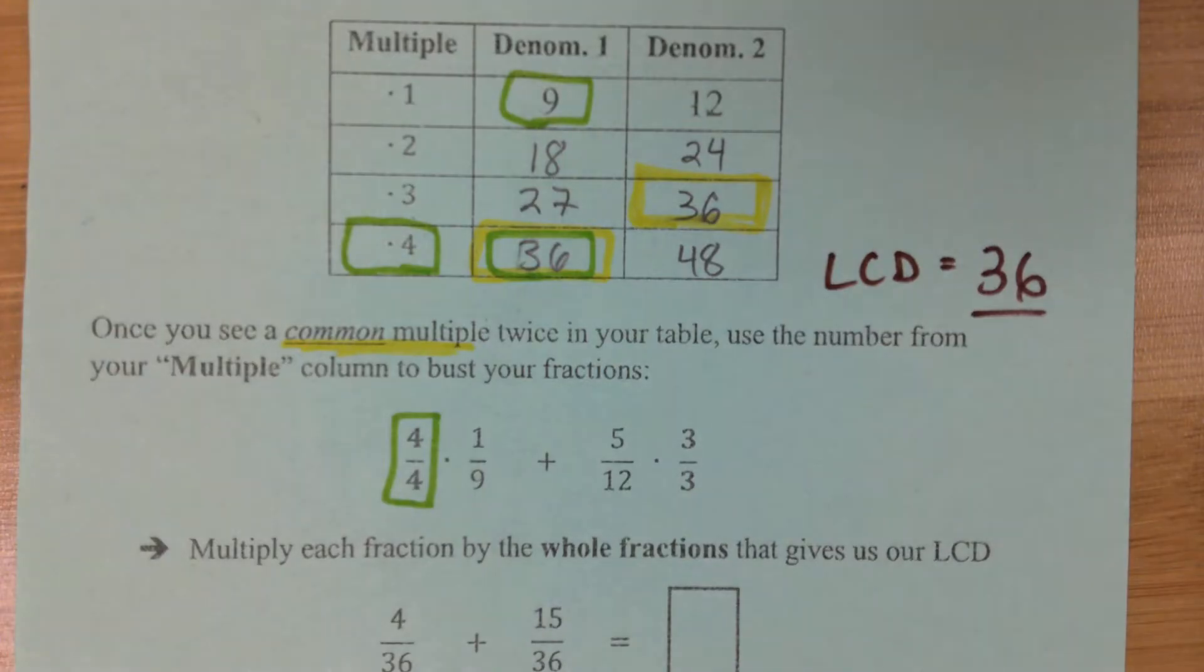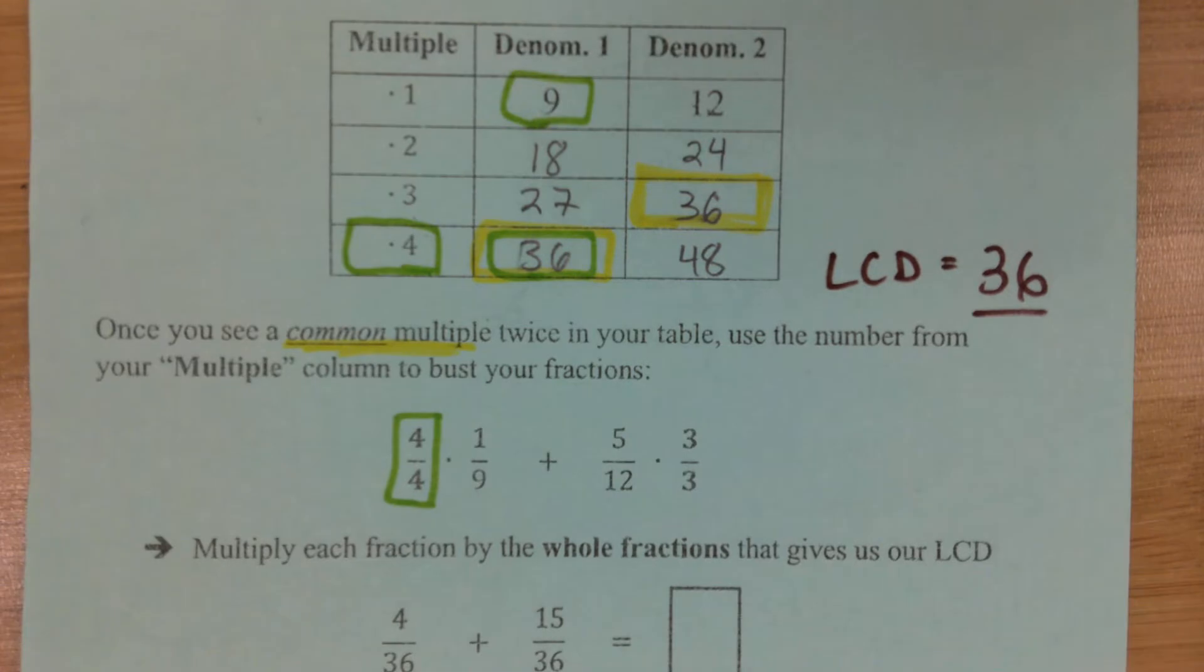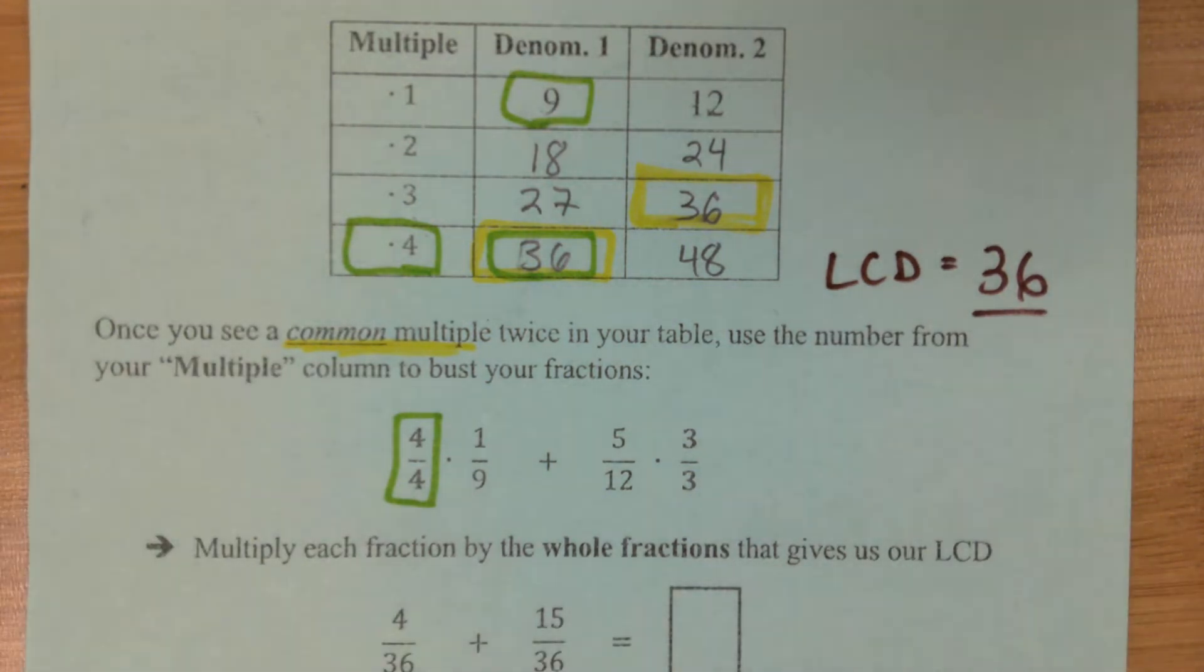No, it doesn't. What's 3 times 1? 3. What's 10 times 1? 10, right? Whenever we multiply a number by 1, we're really just doing nothing with it. Now when we multiply it by a fraction, a whole fraction as we call it, because the top number is the same as the bottom number, we're not changing what the number is. We're just kind of inflating it a little bit so we can get a better idea of what fraction we're going to have when we add them together.